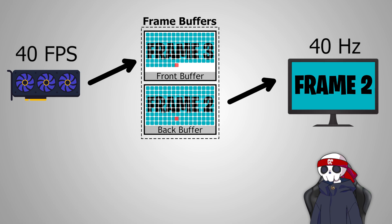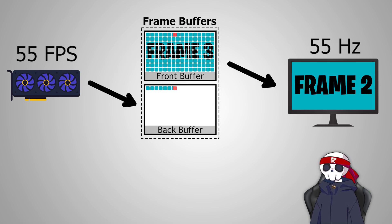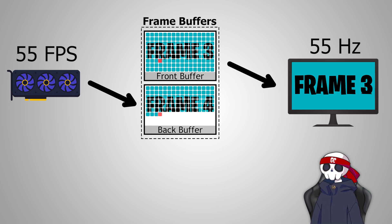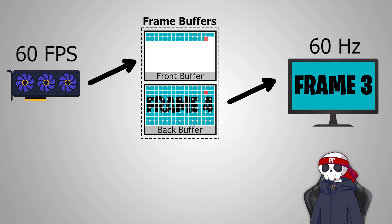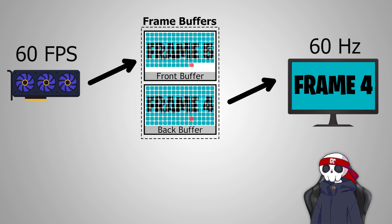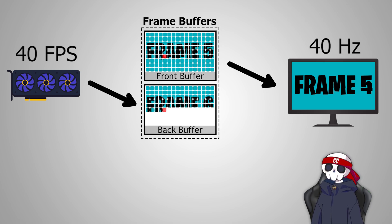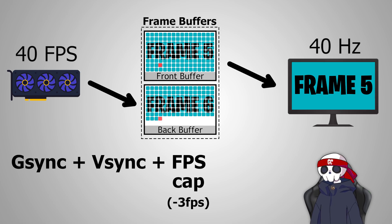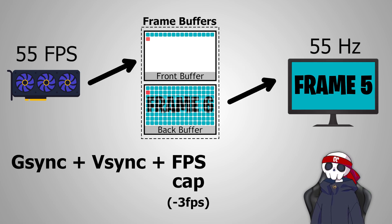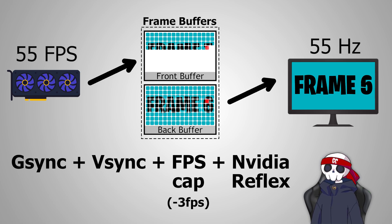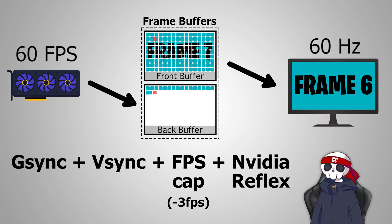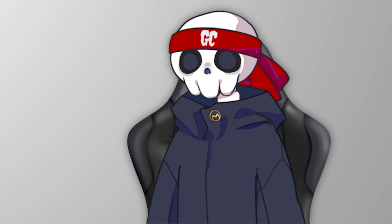With G-Sync, your stuttering and screen tearing problems are solved, but there are two limitations. First, it's expensive — you cannot run this on any monitor; you have to buy a G-Sync or FreeSync compatible monitor. Second, this technology only works if your GPU is producing fewer frames than your monitor's maximum refresh rate, because your monitor cannot exceed its maximum refresh rate — in that case you will see screen tearing. To solve this, you can use G-Sync with V-Sync, cap your game's FPS 3 frames below your monitor's refresh rate, and use NVIDIA Reflex for low input latency. That way you can achieve zero screen tearing with no other issues.